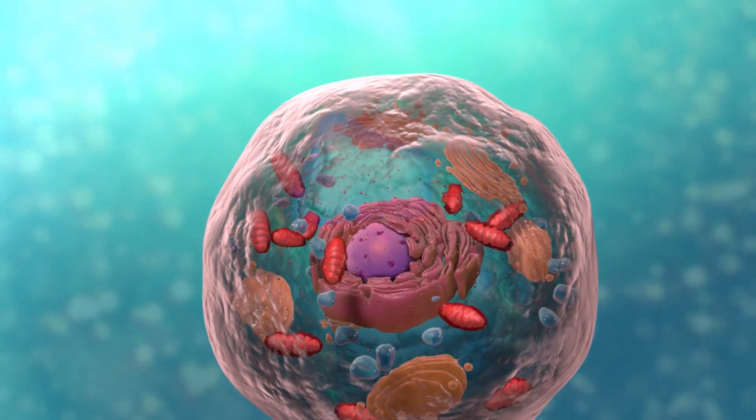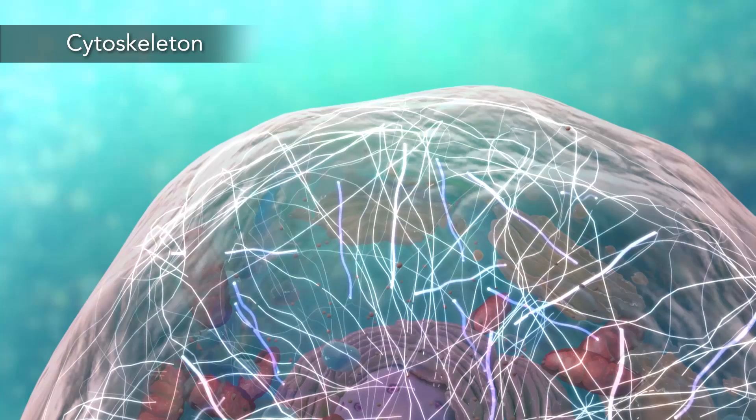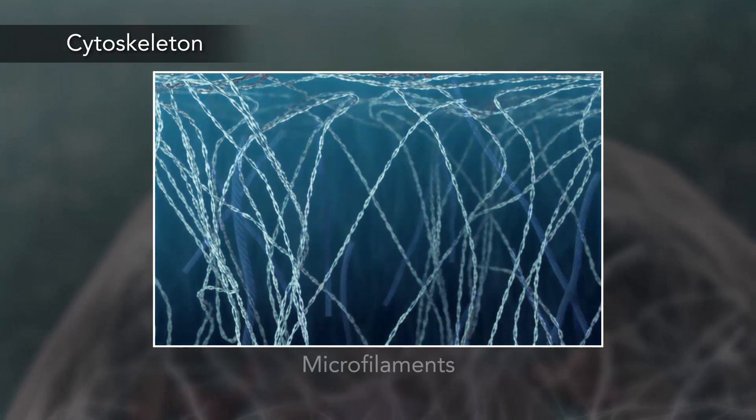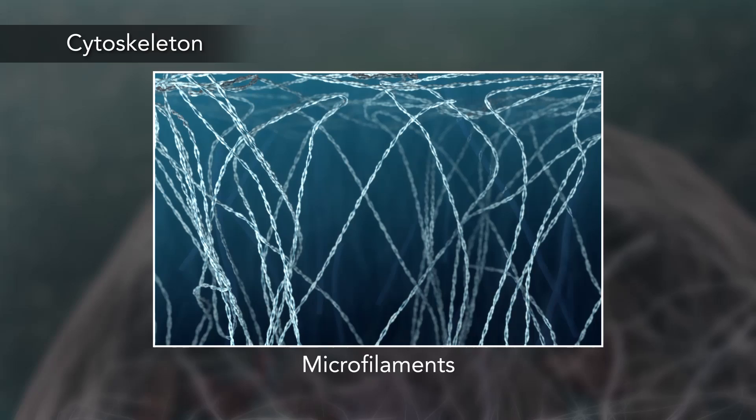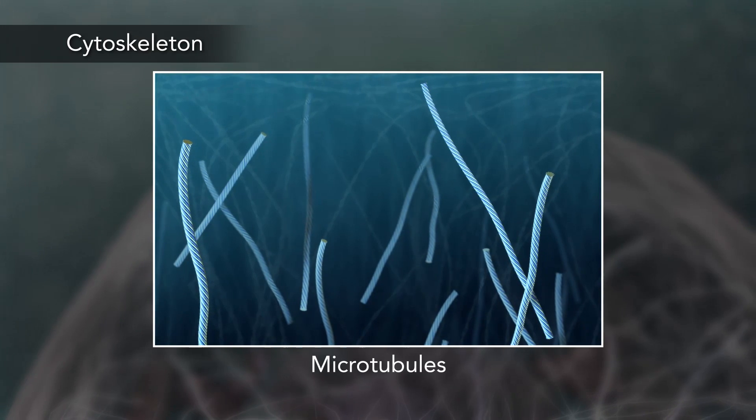Meanwhile, the cell maintains its shape through a cytoskeleton. The cytoskeleton includes the thread-like microfilaments, which are made of protein, and microtubules, which are thin, hollow tubes.